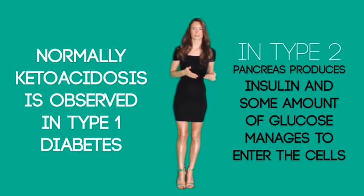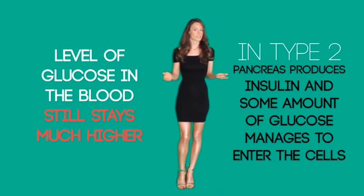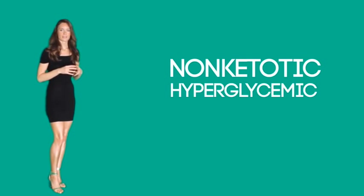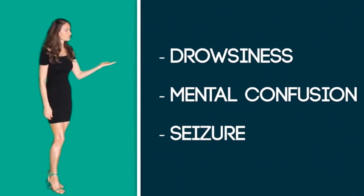Diabetic ketoacidosis generates symptoms including nausea, vomiting, deep and rapid breathing also known as Kussmaul breathing, fatigue, weight loss, abdominal pain, and the smell of acetone in the breath. Ketosis is normally observed in type 1 diabetes only. In type 2 diabetes, the pancreas still produces some insulin and glucose can partially enter cells; however, blood glucose stays much higher than normal, which can result in extreme dehydration known as non-ketotic hyperglycemic hyperosmolar syndrome, producing drowsiness, mental confusion, and possibly seizures.